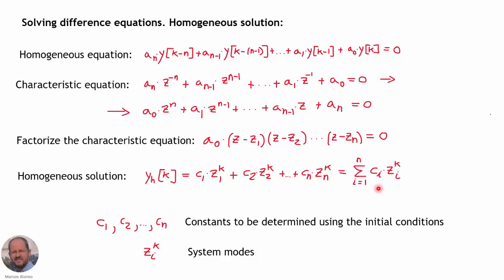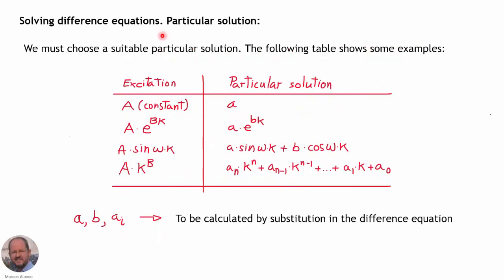Today we are considering only the case where all roots are different — we will not cover multiple roots. The constants c sub 1, c sub 2, through c sub n are determined using the initial conditions, and the functions z sub i to the k exponent are called the system modes. To have the final solution we also need a particular solution of the complete equation, similarly to the differential equation case.